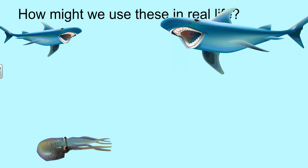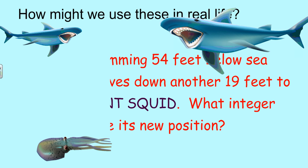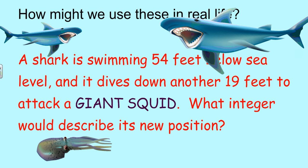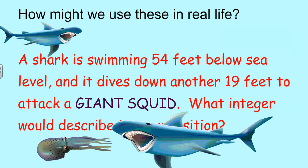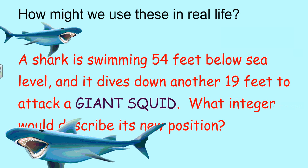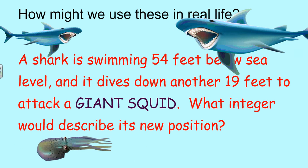How might we use these in real life? Well, that could be very simply explained by a shark swimming 54 feet below sea level. What would be the integer that would represent that? That's correct, negative 54. And it dives down another 19 feet, so that would be like subtracting 19 to attack a giant squid. What integer would describe its new position?